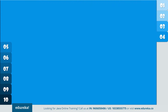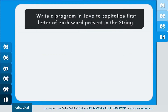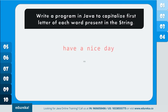The next problem statement is: write a program in Java to capitalize the first letter of each word present in the string. In this example, we have to capitalize the first letter of each word separated by a space. Let's see how to do that with the help of code.